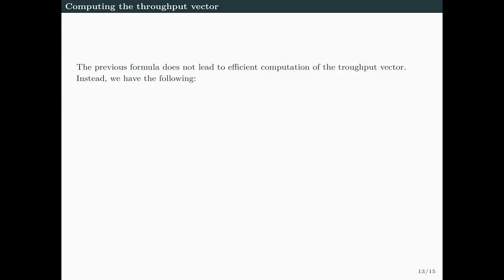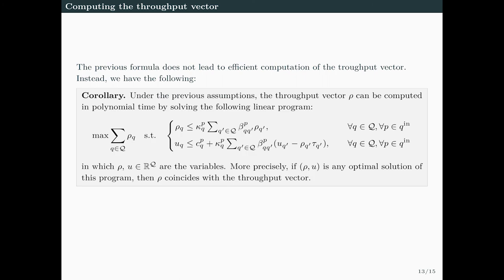As a last result, we remarked the previous formula doesn't lead to very efficient computation of the throughput vector. Instead, the throughput vector ρ can be computed in polynomial time by solving a linear program. This result directly follows from the correspondence between Petri nets and SMDPs. We point out that other LP approaches exist to compute the throughput, such as the one introduced by Gojal and Juha in 2004.